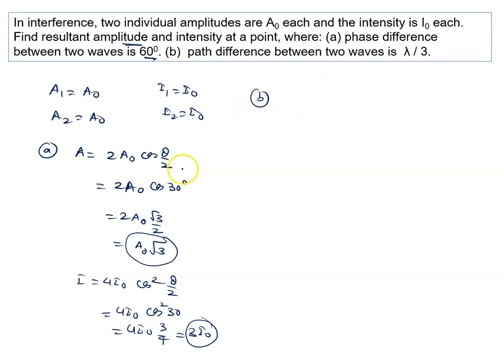When the path difference is lambda by 3, the phase difference is given by delta phi equal to 2π by λ into delta x. So it is 2π by λ times λ by 3, lambda cancels, so delta phi is 2π by 3, or you can say 120 degrees.